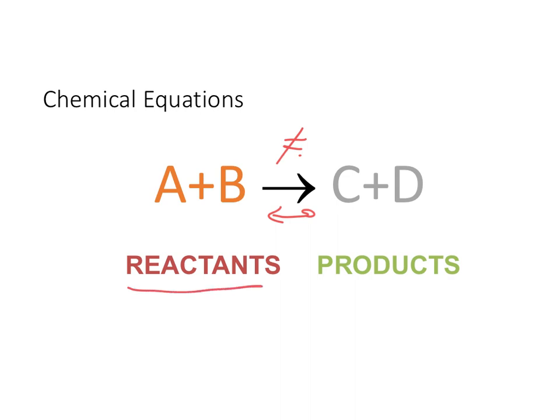Reactants are always written on the left-hand side. Products are always written on the right-hand side. Those are two little formalisms you need to get used to — we're not using the equal sign, reactants go on the left, and products go on the right.